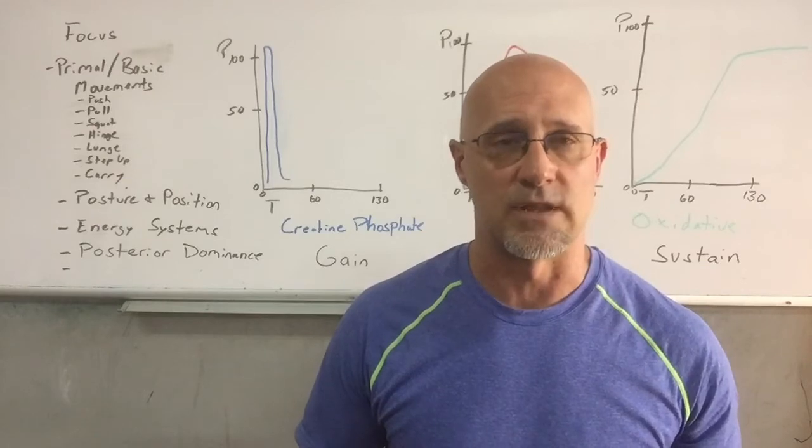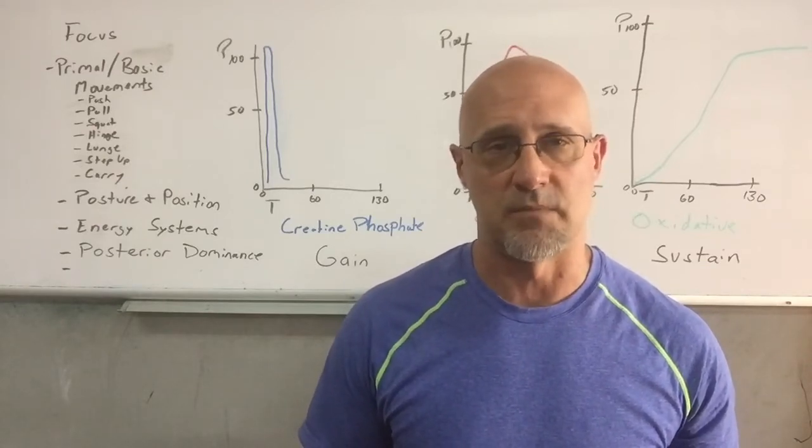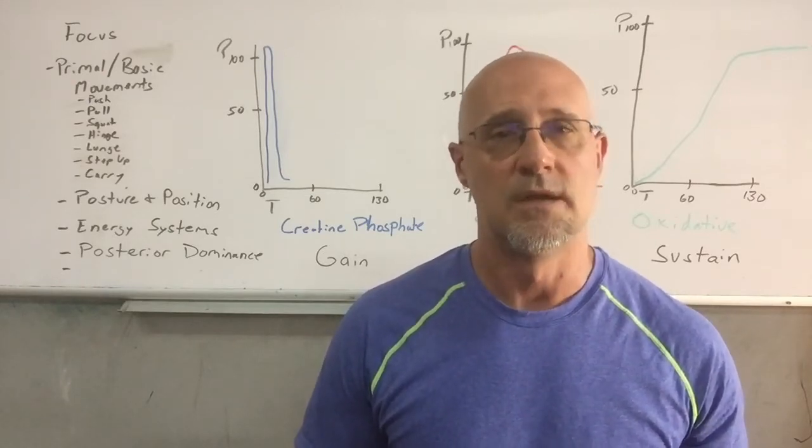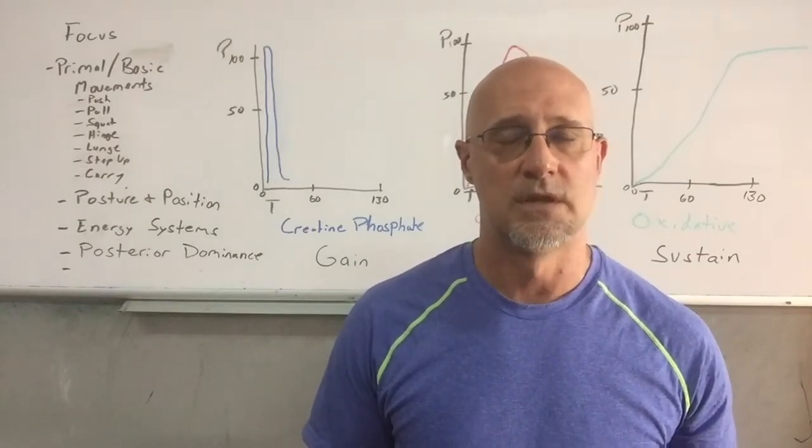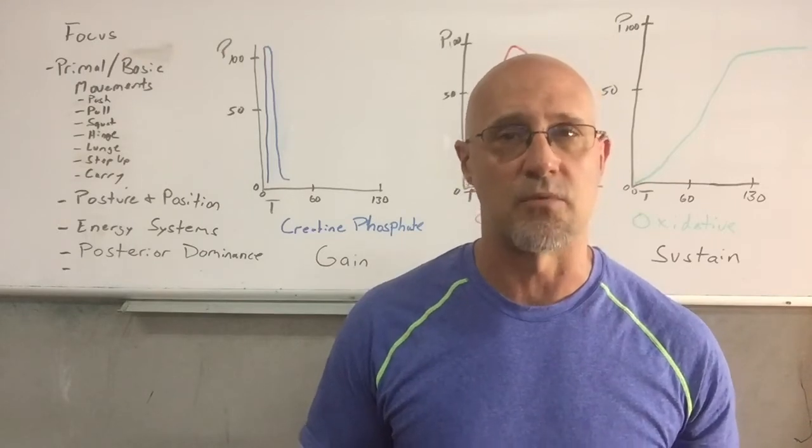We will be looking at some carrying testing and we'll also be looking at some aerobic capacity testing. And we're also going to, over the next several weeks and months, test Helen as one of the benchmarks. Helen of course is three rounds, 400 meter run, 21 kettlebell swings, and 12 pull-ups. There'll be ways to scale that for people that don't have pull-ups.